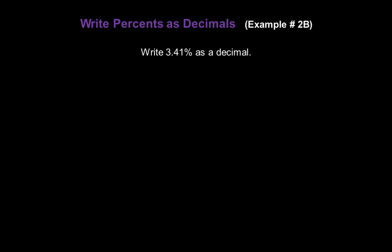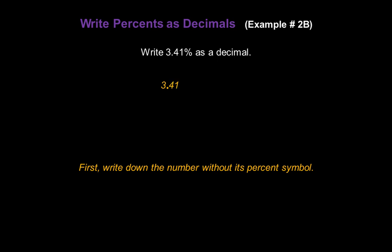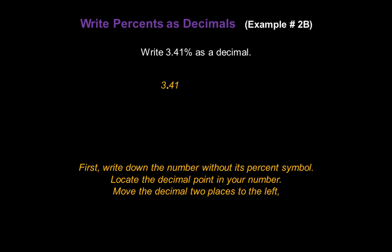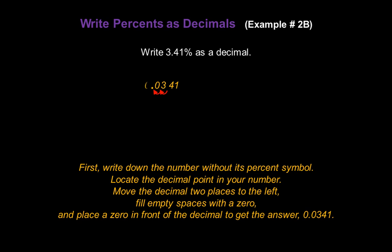Now let's write three point four one percent as a decimal. First, write down the number without the percent symbol. Locate the decimal point — it's between the three and the four. Move the decimal two places to the left, fill the empty space with a zero, and place a zero in front of the decimal. That gives us our answer of zero point zero three four one.